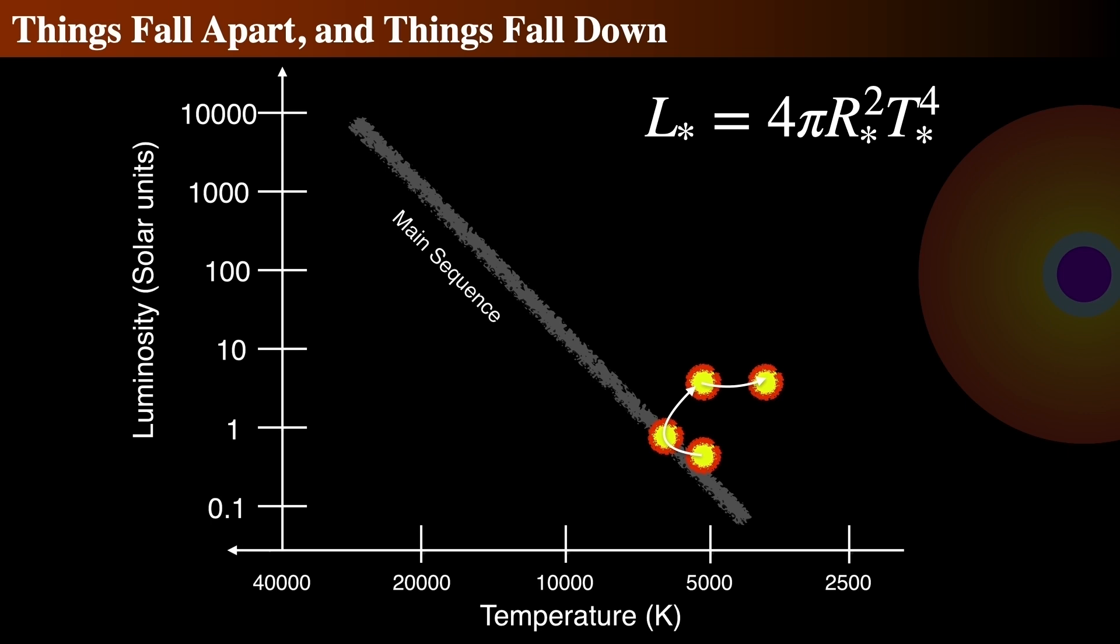To do so, it swells in size from 1.6 to 2.25 solar radii, which cools the surface layers from 5,500 Kelvin down to 4,900 Kelvin.